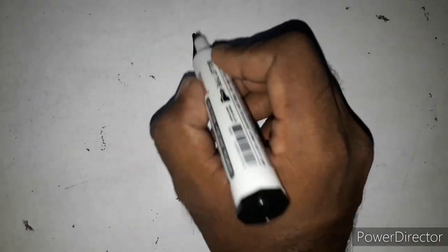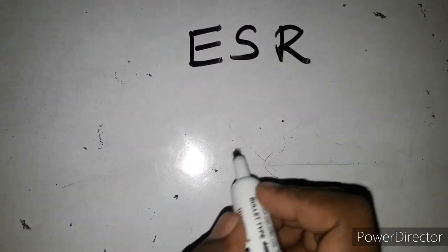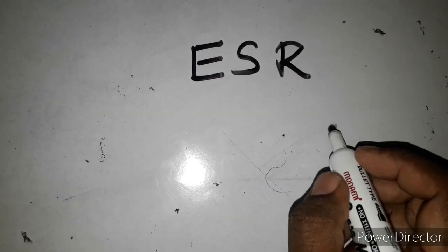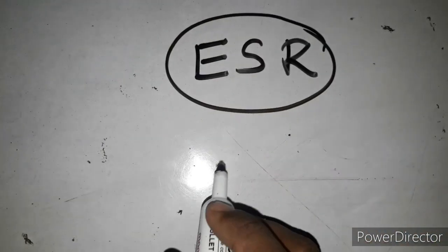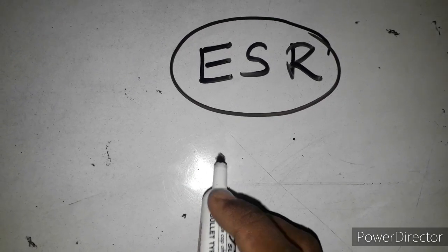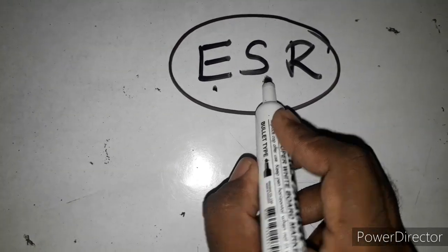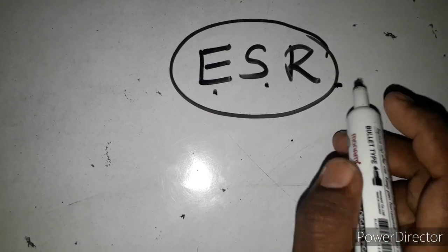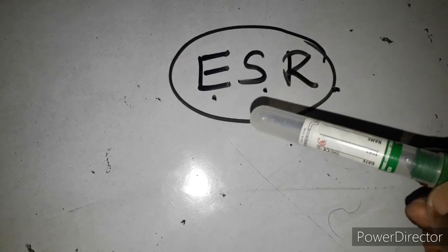Now let's see — this is ESR, Erythrocyte Sedimentation Rate. This is called an A-tube. This is the package.